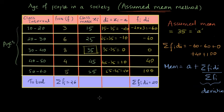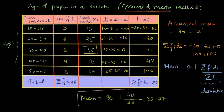So we can find the mean as A which is 35 here plus summation fi di that is 20 divided by 26. And this gives me 35.77.